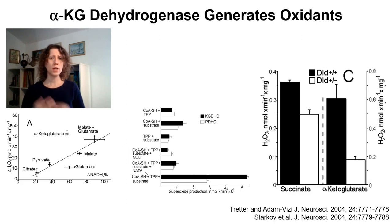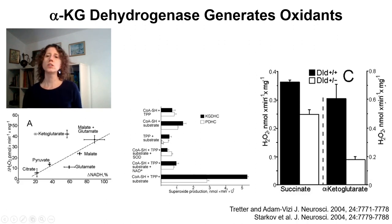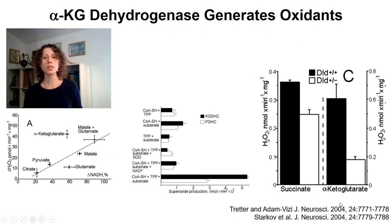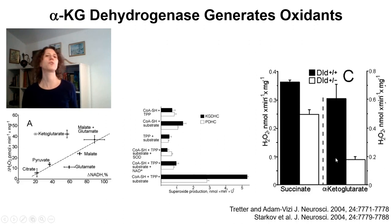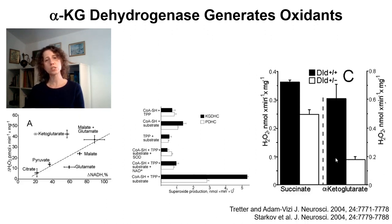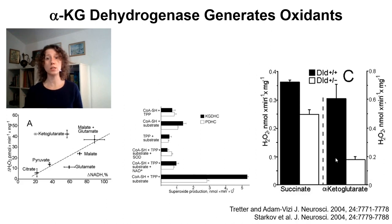As proof that alpha-ketoglutarate dehydrogenase is an important source of oxidants in vivo, they looked at partial knockouts of dihydrolipoyl dehydrogenase, which is the flavo enzyme portion of this enzyme. When this part of the enzyme is absent, hydrogen peroxide generation is much lower in the presence of alpha-ketoglutarate. This shows that flavo enzymes in the mitochondrial matrix are metabolically sensitive sources of mitochondrial oxidants — and I think they are really overlooked as important sources of oxidants in many biological paradigms.